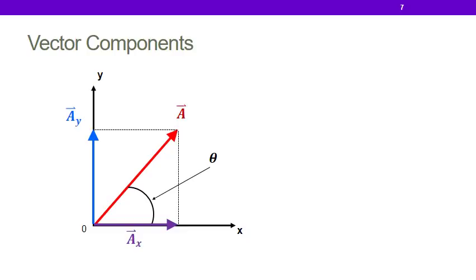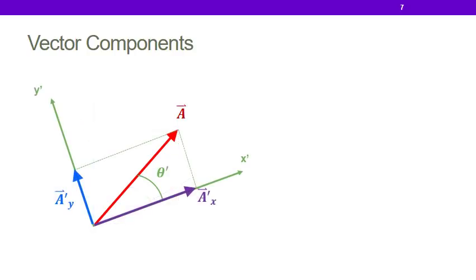Now, I said a was independent of our coordinate system. But one thing to be mindful of is that our components are not. Remember, our components tell us how much a points in the direction of our chosen axes. So, if we choose these axes shown, we would get the purple arrow and the blue arrow as you see them. But what if we picked a different axis? What if we tilted our axis and we picked this green prime axis? Well, you can immediately see the purple arrow got a lot longer and the blue arrow got a lot shorter. Because now, a points a lot more in the x prime direction than it does in the y prime direction.